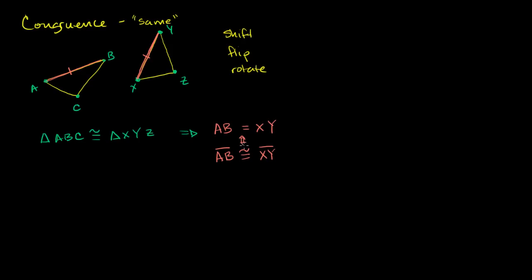So these two things mean the same thing: if one line segment is congruent to another, that just means the measure of one is equal to the measure of the other. We can go through all the corresponding sides. If these two triangles are congruent, we also know that BC is going to equal the length of YZ, and we put double hash marks to show those two lengths are the same. We also know that AC is going to be equal to the length of XZ. Not only do all corresponding sides have the same length, but all corresponding angles have the same measure.